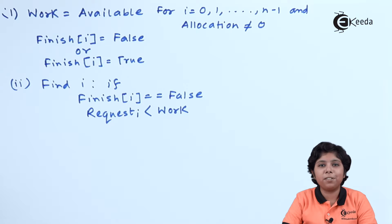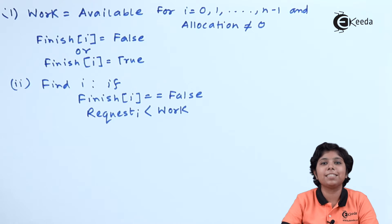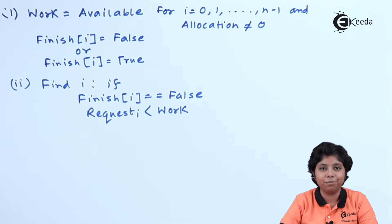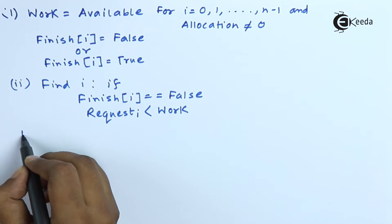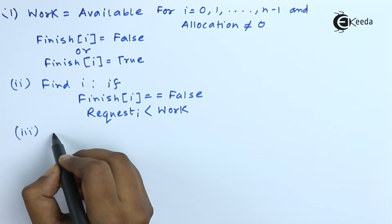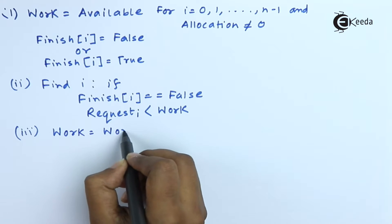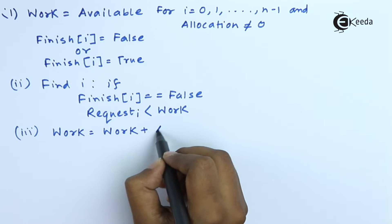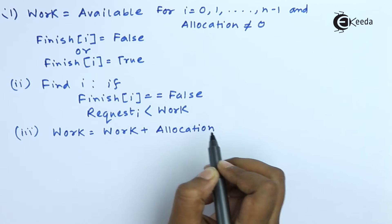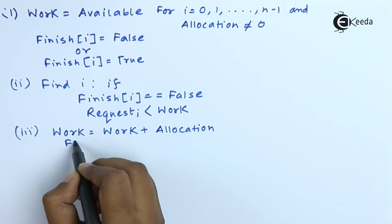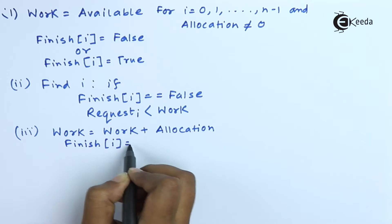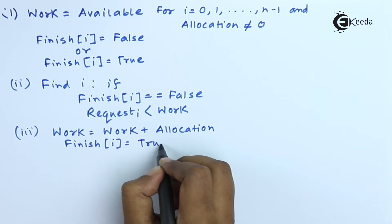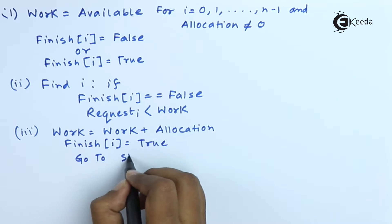Next, we find all processes i where finish[i] is false and request[i] is less than or equal to the work data structure. If both conditions are satisfied, we proceed to the next step; otherwise we go to step 4.